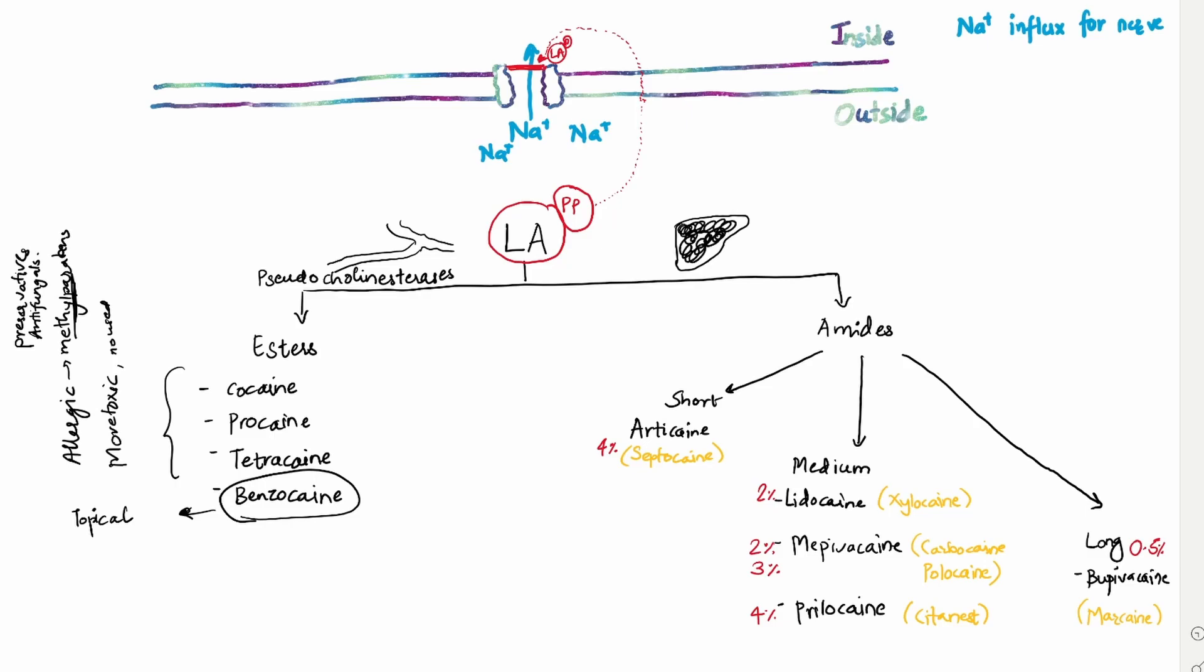This is how the LA attached to a plasma protein acts. And this is how it prevents those sodium ions from going inside the nerve channel. So LA blocks sodium channel from inside.